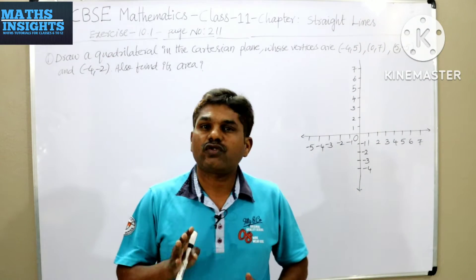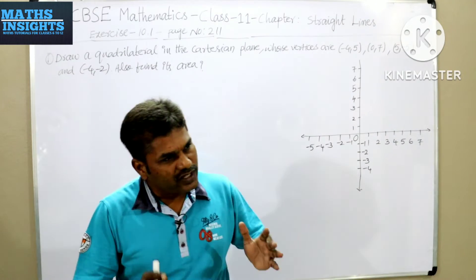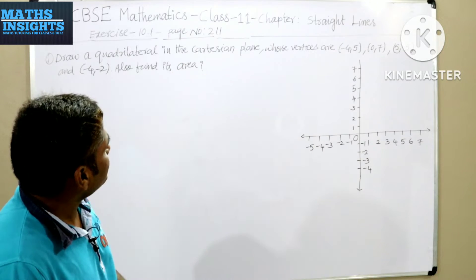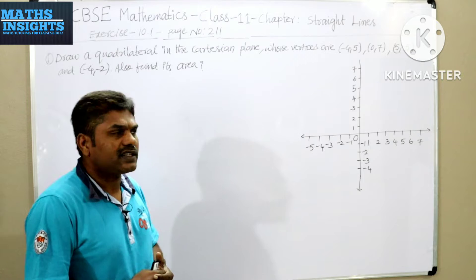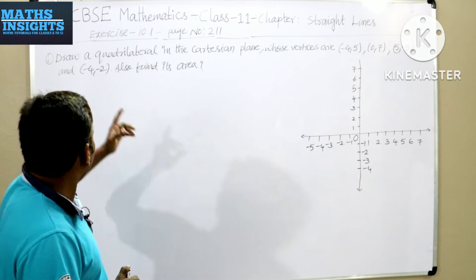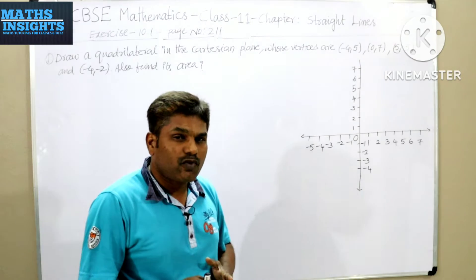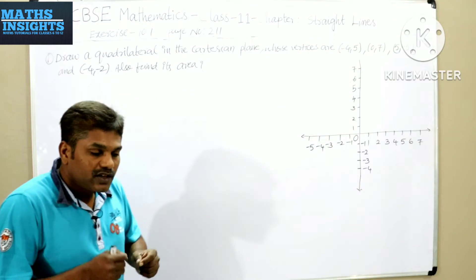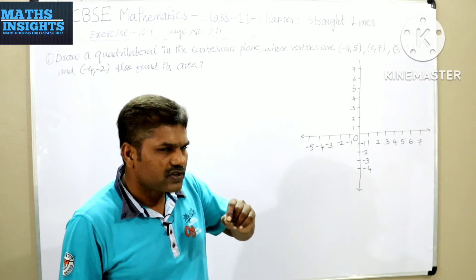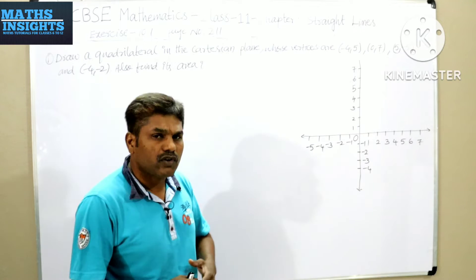Hi students, welcome back to our YouTube channel Mass Insights. Today's topic is on straight lines of Class 11 CBSE mathematics. We are dealing with Exercise 10.1 and we are going to solve the first problem. It is a very easy problem, but you have to concentrate on it, because when putting numbers and doing calculations go wrong, your answer will also go wrong.